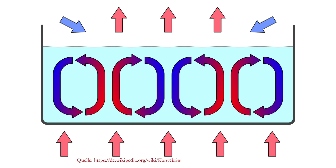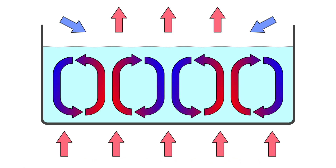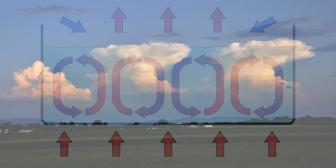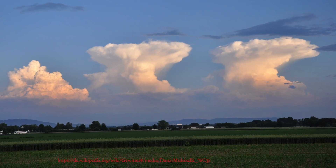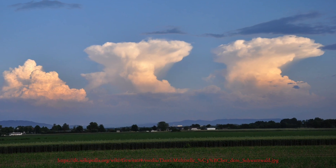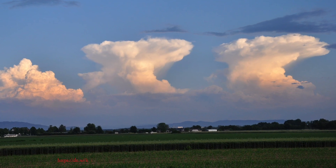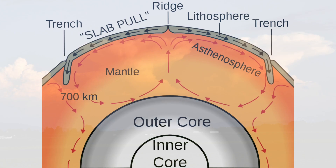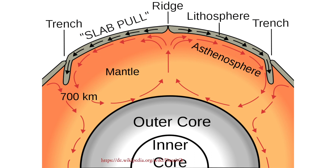Such convection phenomena also occur, for example, in the atmosphere, especially in the formation of thunderstorms, or in the formation of volcanoes on hot magma from the Earth's interior.